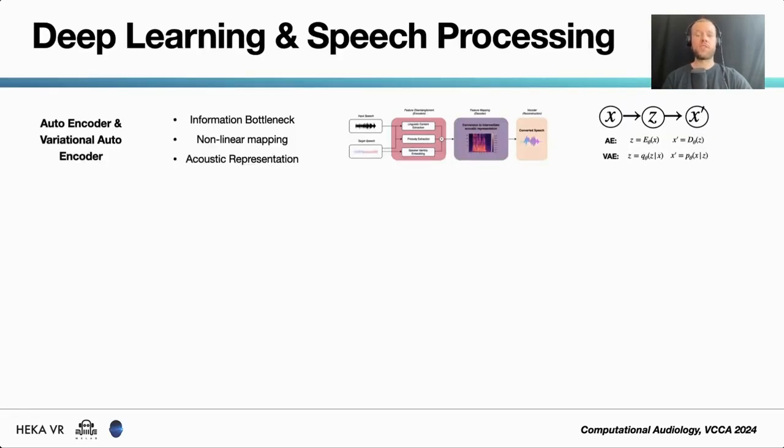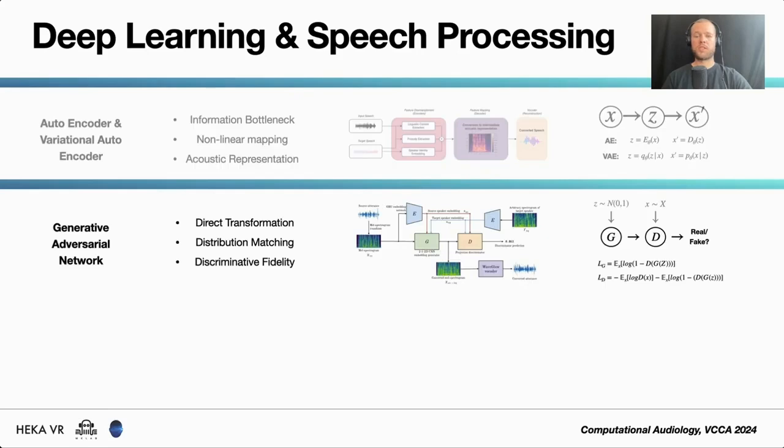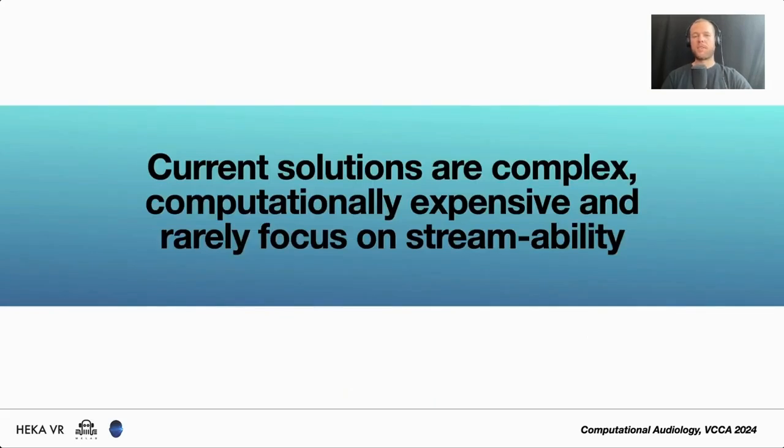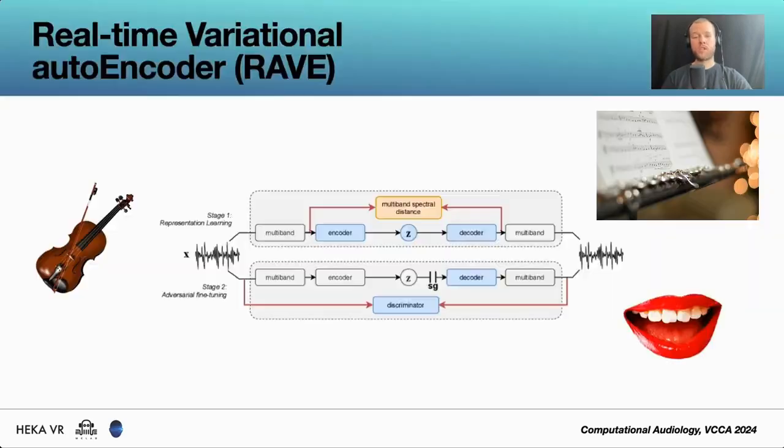There exist many ways to carry out voice conversion using deep learning. This could be done through autoencoders and variational autoencoders, through generative adversarial networks, but also diffusion models, which has provided quite realistic results. The problem with these models, though, are that they are still very complex, computationally expensive, and rarely focused on streamability. And in order to overcome this, we take inspiration in the world of music generation.